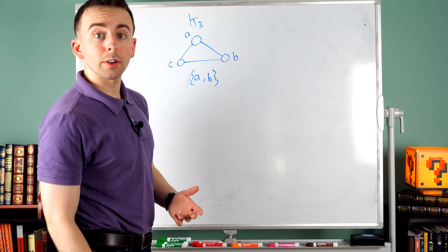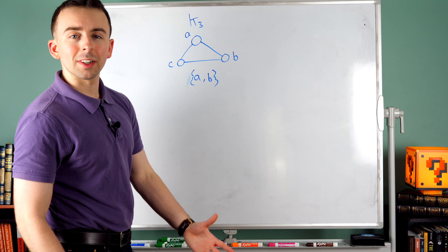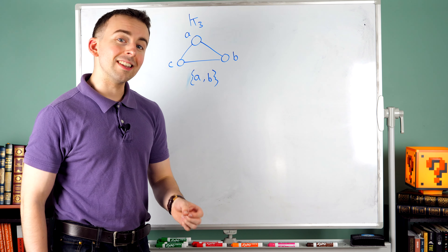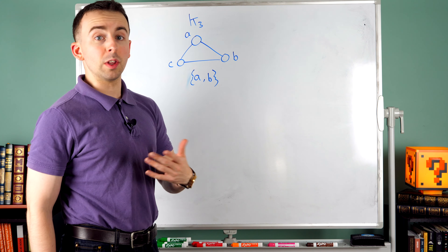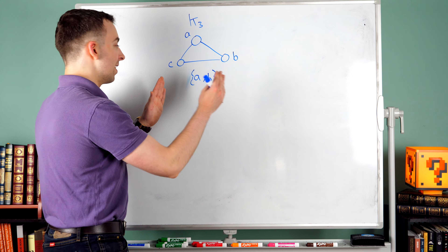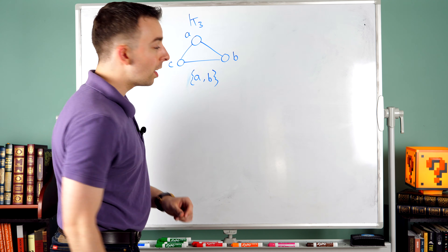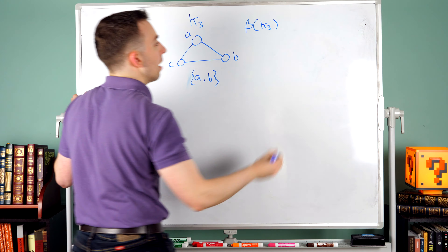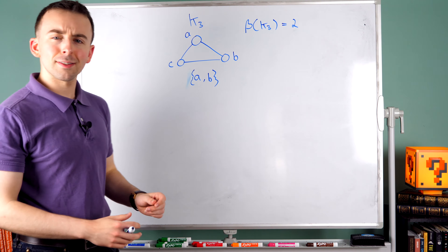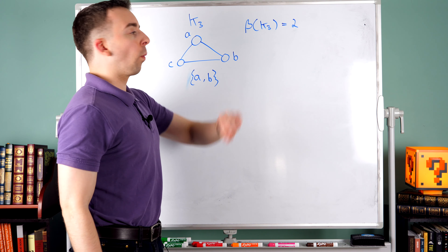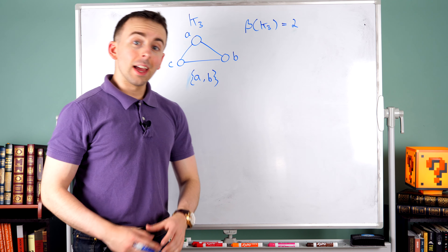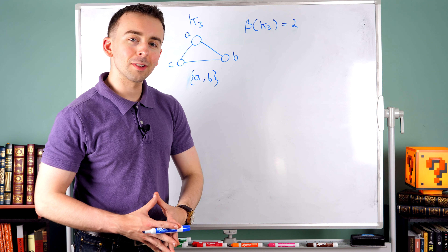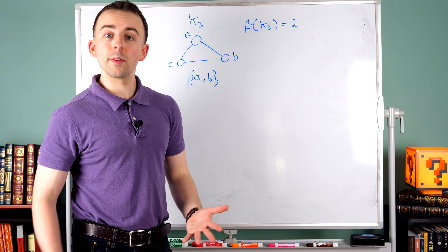So there we have a vertex cover of k3, and this happens to be a minimum vertex cover, which is often what we're most interested in. It is a vertex cover with as few vertices as possible. There's no way to cover this graph with fewer than two vertices. Since the number of vertices in a minimum vertex cover is two, we say the vertex covering number of k3, denoted beta of the graph, is equal to two. You might notice that's one less than the order of the graph — one less than the number of vertices. When we introduce characteristics like independence numbers and vertex covering numbers, we're very interested in finding those numbers for common families of graphs.